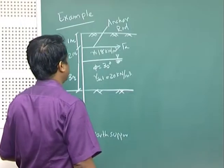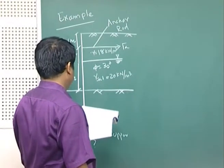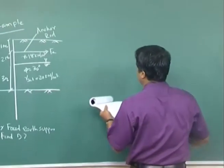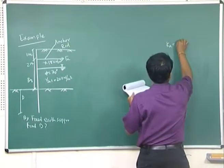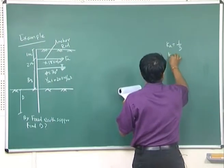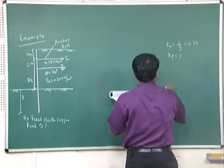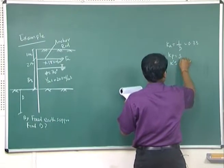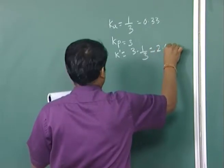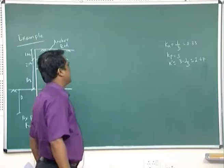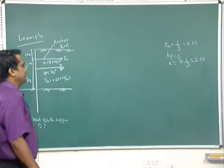For the equivalent beam method, the first step is to find Ka, Kp, and all other parameters. From the given phi value of 30 degrees, Ka equals one-third, Kp equals 3, and K' equals Kp minus Ka, which is 3 minus 1/3, equal to 2.67. The next step is to draw the pressure distribution diagram.